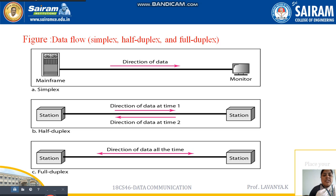What is the simplex method? In the simplex method, two devices make a transaction in only one direction — one device sends data in one direction, and the other device receives that data. This is the simplex method. In the half duplex method, the transaction happens two ways.